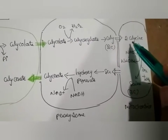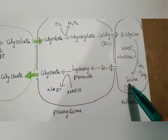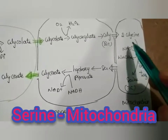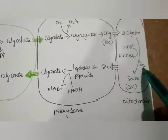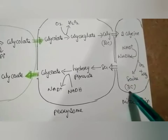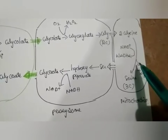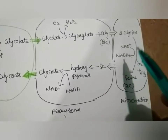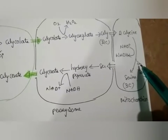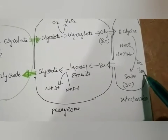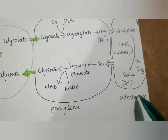Glycine then enters into the mitochondria, where two molecules of glycine are converted into serine, which is a three-carbon compound. Two molecules of glycine have four carbons total; three carbons go into the formation of serine, and one carbon is released by decarboxylation. In mitochondria, oxidative decarboxylation takes place, by which CO2 is released and ammonia (NH3) is also removed. CO2 and ammonia are produced in mitochondria only.